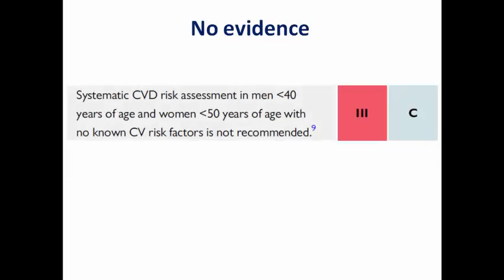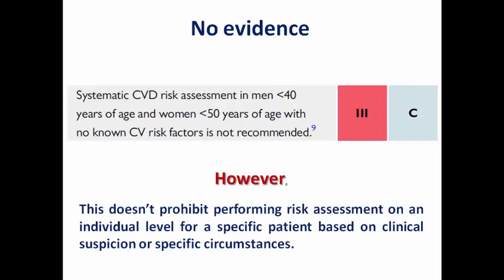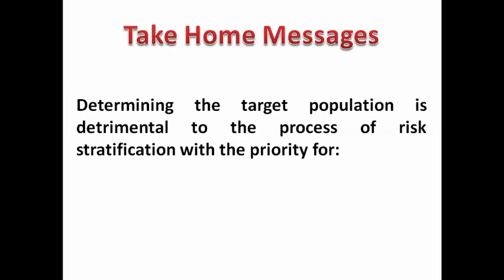There is currently no evidence to support systematic cardiovascular risk assessment in men under 40 or women under 50 who have no cardiovascular risk factors. However, this refers specifically to systematic screening — it does not mean you are not allowed to perform risk assessment for an individual who attends your clinic and whom you suspect may have high cardiovascular risk due to, for example, an unhealthy lifestyle. Class 3 here applies to systematic screening in young populations without any known cardiovascular risk factors.